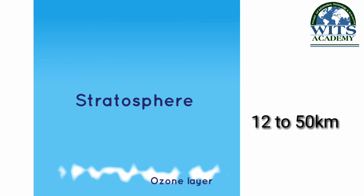Doosri layer jiska naam hai stratosphere — yeh troposphere ke baad aati hai aur yeh takreeban 12 kilometer se lekar 50 kilometer ki bulandi tak paai jaati hai. Jo zameen par zindagi guzarne wale jandaron ke liye bahut ahmiyat ki hamil hai, isi layer mein paai jaati hai, jo suraj ki khatarnak shuaon se hume bachati hai. Isi layer mein jet jahaaz bhi udte hain. Temperature ke badhne ki waja seठंड hawa is layer ke bottom se aur garam hawa top mein paai jaati hai.